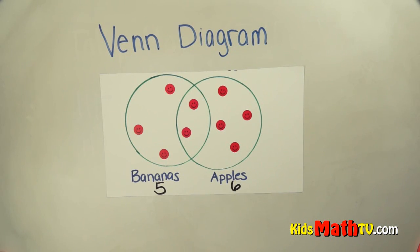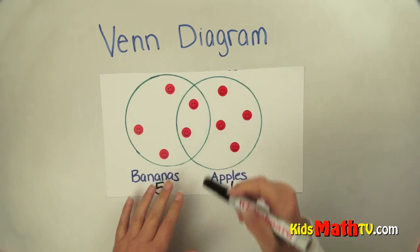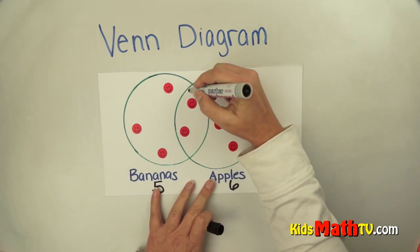If we look though, if we look at this, the 2 overlap. This circle and this circle overlap. In the middle you see this area.